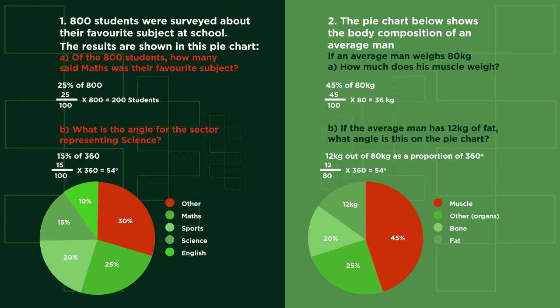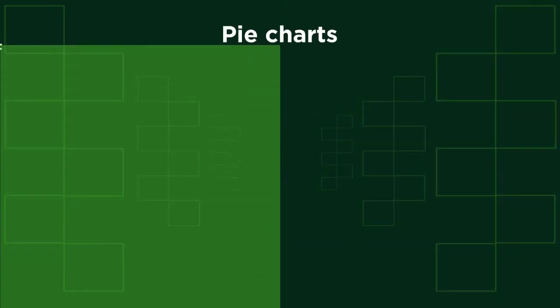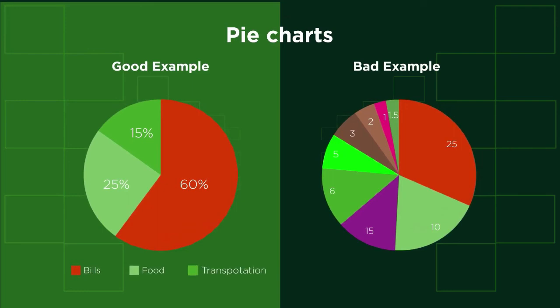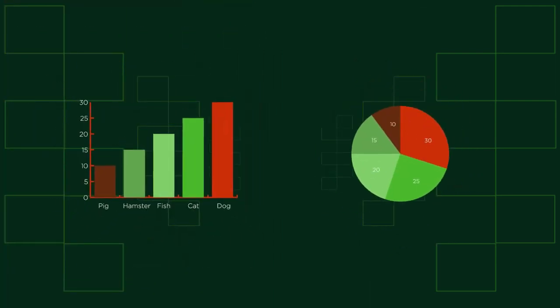That's all there is for pie charts. We need to carefully choose when to use them to make sure that they do actually show differences in the data. Most people find data much easier to understand when it's given to them visually, like with bar graphs and pie charts.